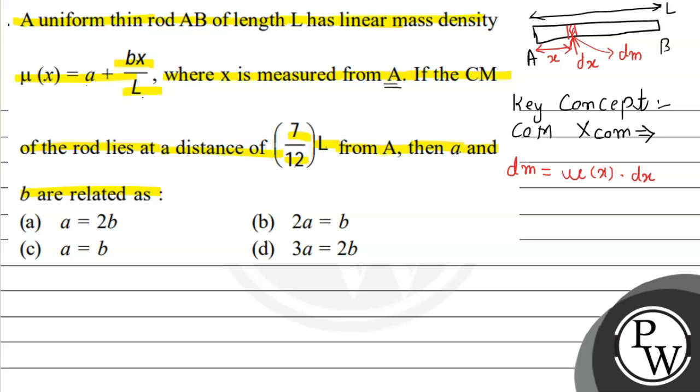So, by using the conceptual formula, I can say that the x center of mass for the rod will be equals to integration of mu dx into x divided by integration of mu dx. The integration will vary from 0 to capital L. The value given is 7 by 12 times of capital L.